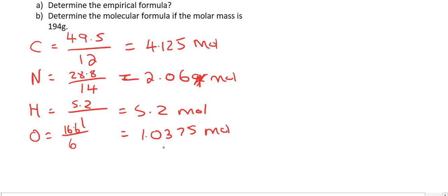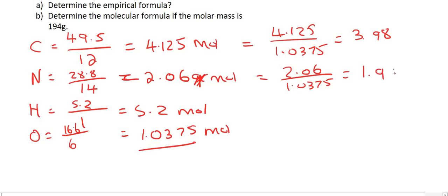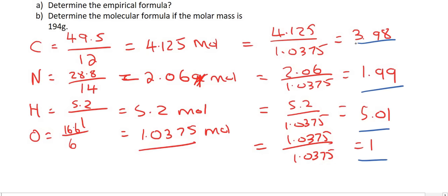Next step, we divide all of those by the lowest one. So the lowest one is oxygen. So 4.125 divided by 1.0375 gives us 3.98. For the nitrogen, 2.06 divided by 1.0375 gives us 1.99. For hydrogen, 5.2 over 1.0375 gives us 5.01. And oxygen divides by itself giving us 1. These numbers should be fairly close to whole numbers, so we can round this up to 4, this one to 2, this one to 5, and this one to 1. So when we put the formula down, the empirical formula is C4N2H5O.